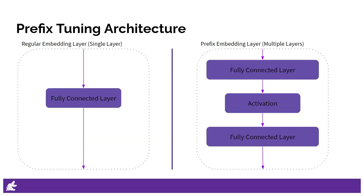By using two fully connected layers, we can leverage their capability to learn and capture complex patterns and relationships in the data. This allows for a more effective and efficient update of the embedding layer, leading to improved performance overall. The multi-fully connected layer acts as a bridge between the input data and the embedding layer, enabling the model to better understand the underlying structure and nuances of the data. It helps to refine the embedding representations by incorporating information from the surrounding context and optimizing the embeddings based on the specific task at hand.